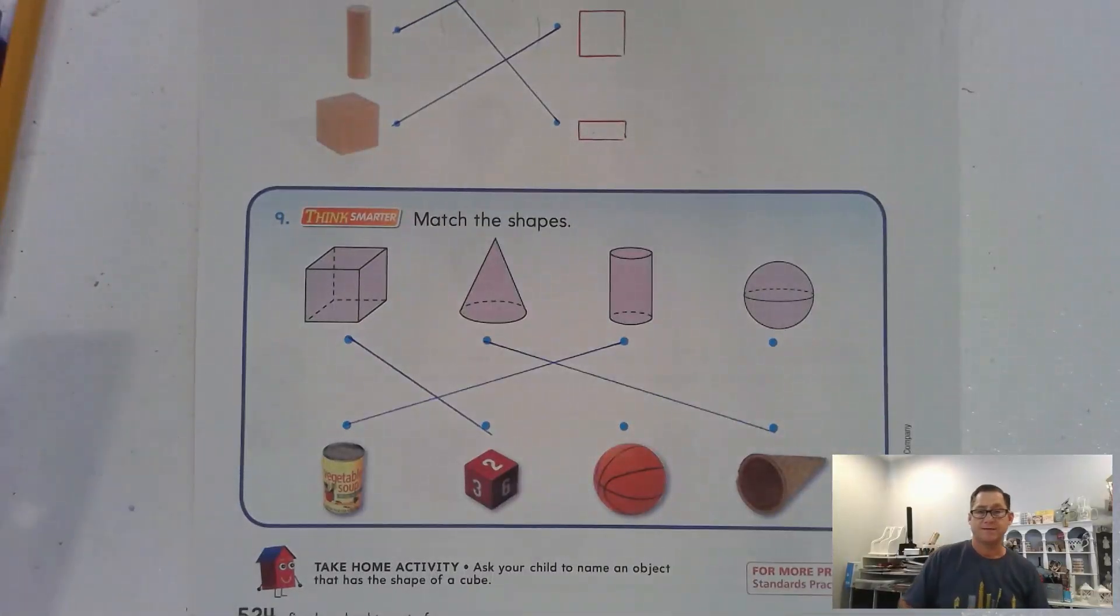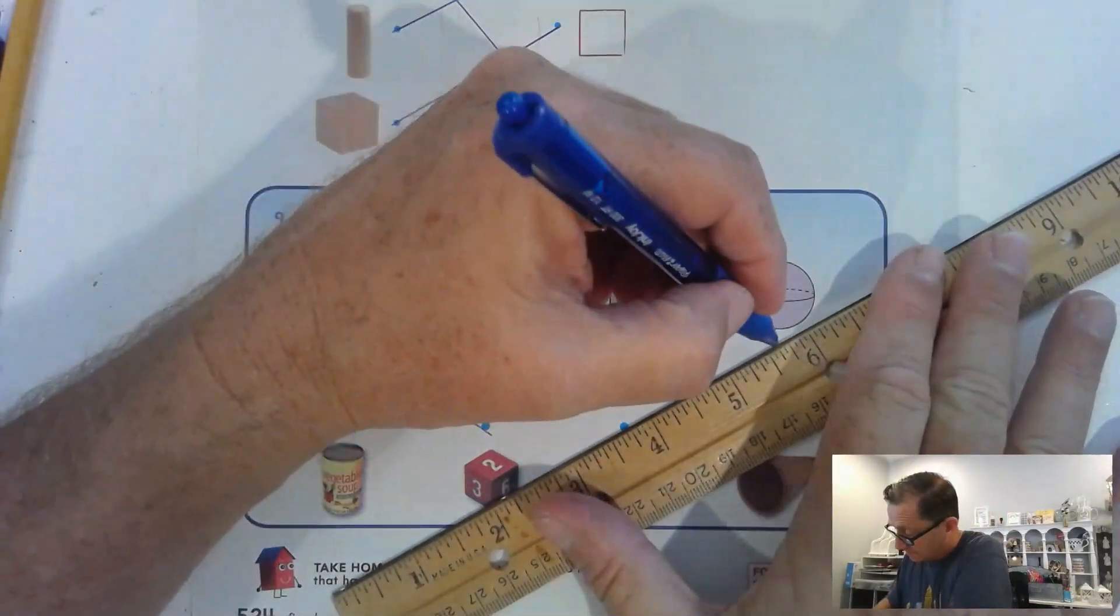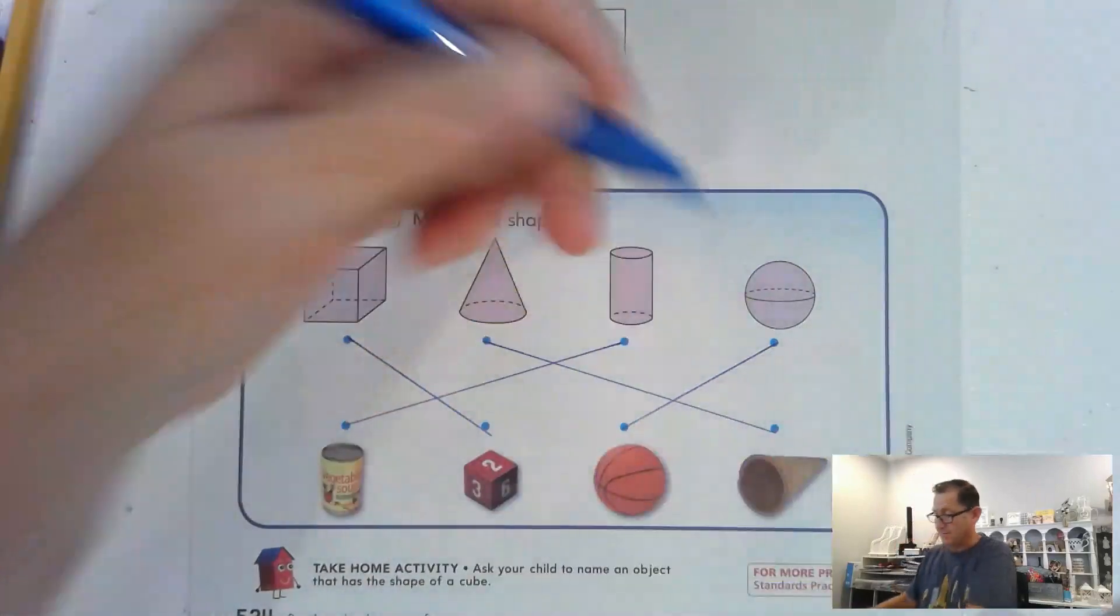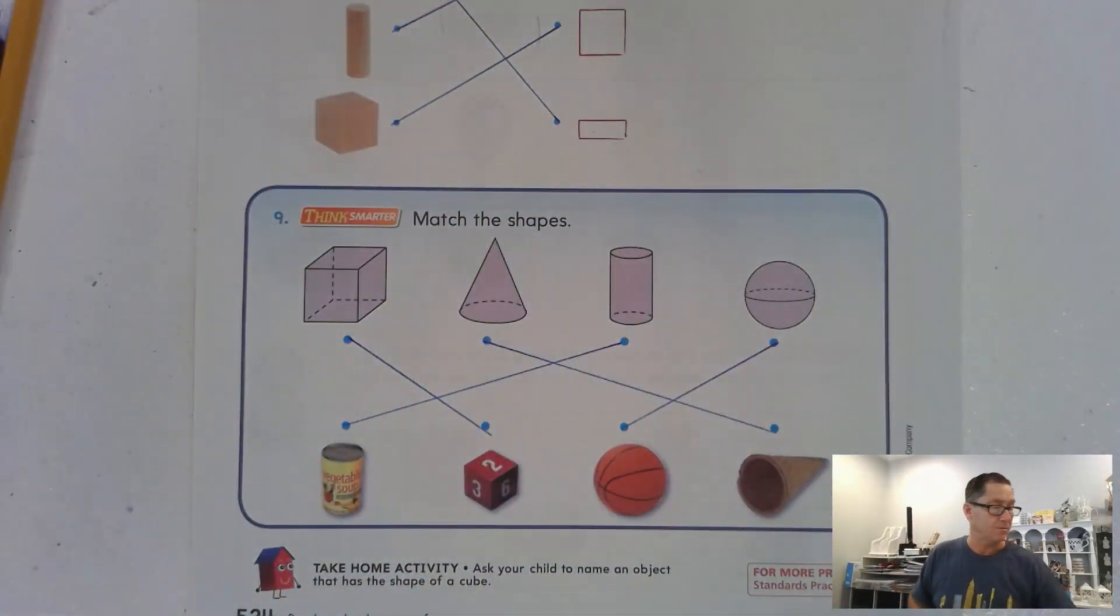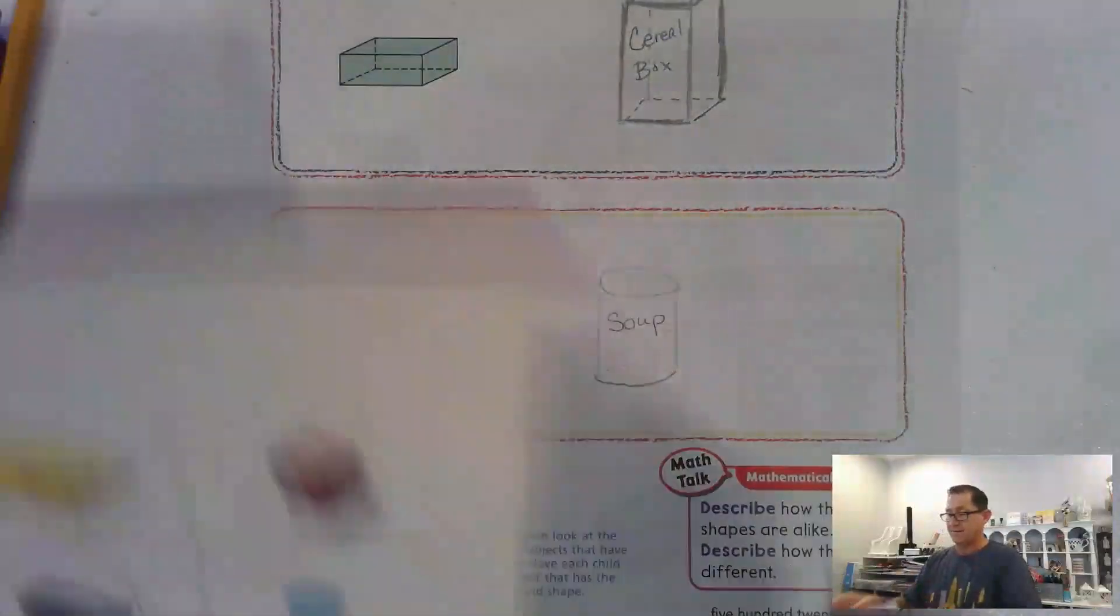And that leaves us one object, the sphere, which is the basketball. So, double check your work. And that's all there is to identifying those three-dimensional shapes.